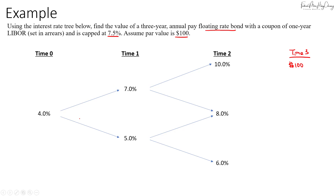We need to determine the coupon. The coupon is determined in arrears: at time 0 the interest rate is 4%, so the coupon at time 1 is $100 × 4% = $4, which is below the 7.5% cap. At time 1 the rate is 7%, giving a coupon of $7 in the next period. At time 2, a rate of 10% gives a coupon of $10 at time 3.